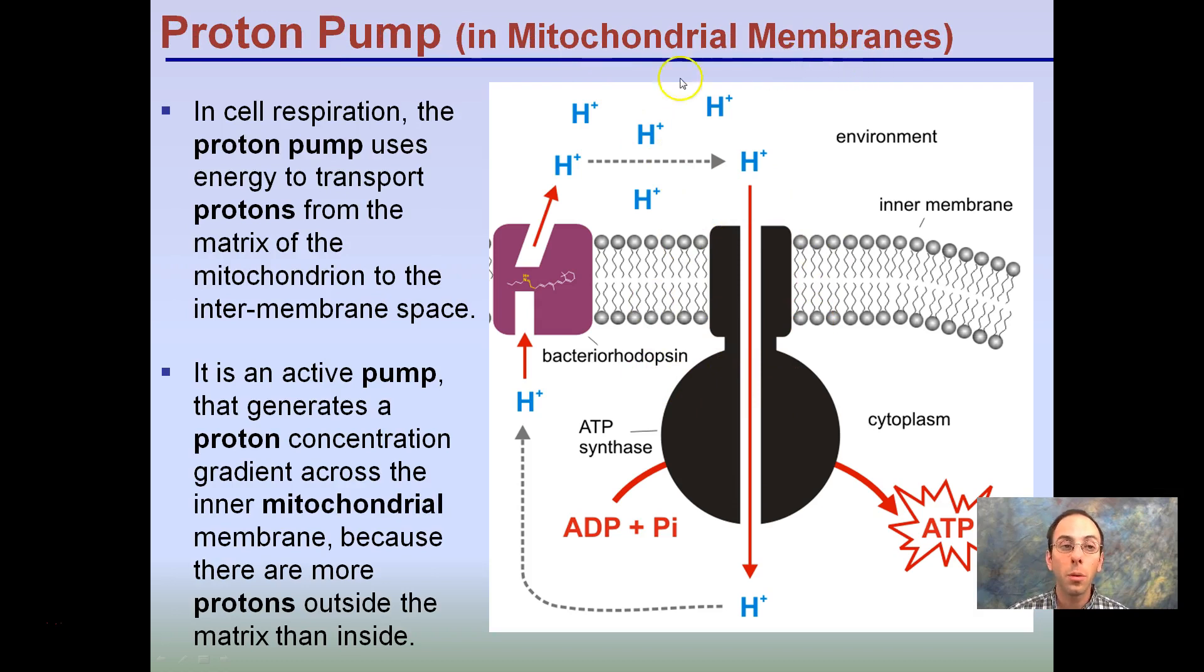Here's our proton pump. Mitochondrial membranes. In cellular respiration, the proton pump uses energy to transport protons from the matrix of the mitochondria to inter-membrane space. What does that mean? We're simply taking our hydrogen ions and we're concentrating them on one side. They want to diffuse across. They can't get through this phospholipid bilayer, but they can get through this ATP synthase. That's this big black molecule here. And because they're moving through, as they're moving through, the cell, in this case, the ATP synthase, it's harnessing that energy, and it's using that flow of protons to take ADP plus the phosphorus to generate ATP. This is an active pump that generates proton concentration across the mitochondrial membrane because there are more protons outside the matrix than inside. This is part of the reason why mitochondria have so many folds in them because they're having a lot of these ATP synthases in the membranes, allowing a lot of energy to be generated.